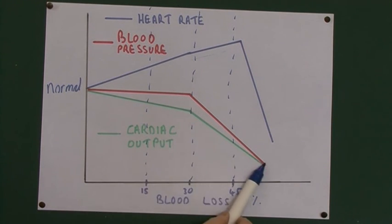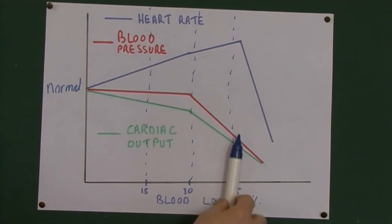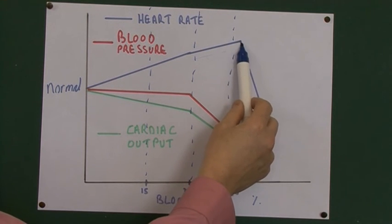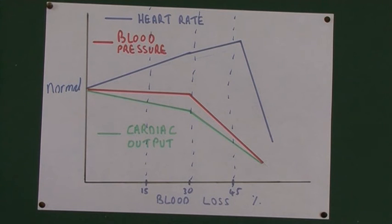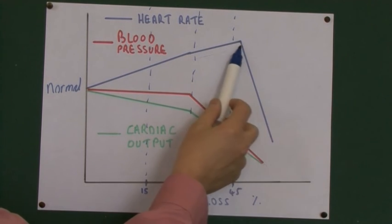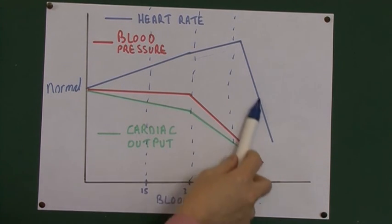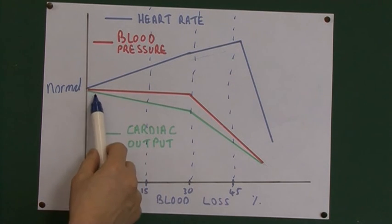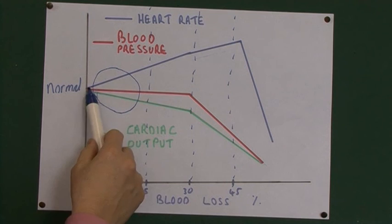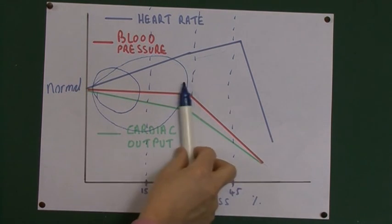The blood pressure can drop off really quite quickly — alarmingly quickly. When greater volumes of blood have been lost, like 45%, the tachycardic response crashes off and we lose the compensatory response entirely. Blood pressure and cardiac output fall to really dangerously low levels. If a child becomes bradycardic — the blue line being the heart rate — that's pretty well a pre-terminal event. Treat it very aggressively with fluid resuscitation.